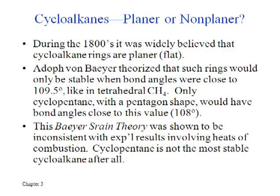It was thought that if you make cycloalkanes they're automatically always going to be flat. Adolph von Baeyer thought that was the case, but if that's true then there's really only one size ring that should be stable — the one corresponding to cyclopentane — because if it were a pentagon shape all of the bond angles would be right at 108 degrees, pretty close to the tetrahedral value of 109. But as we will see on the next slide, Baeyer was wrong about his strain theory.